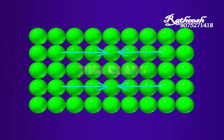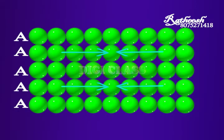So each row can be named as A-type row. This kind of arrangement is called AAA type of arrangement.